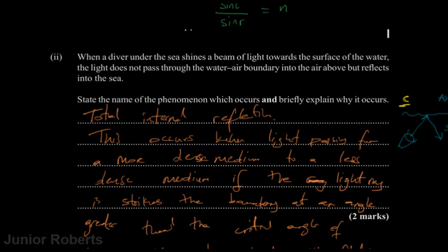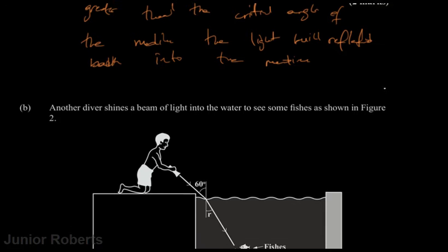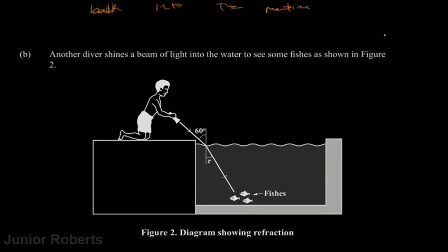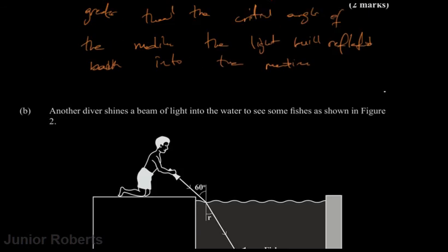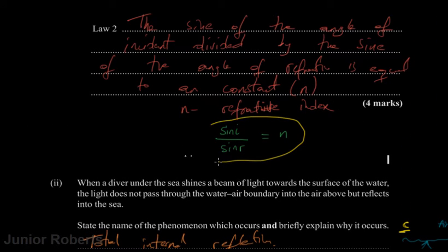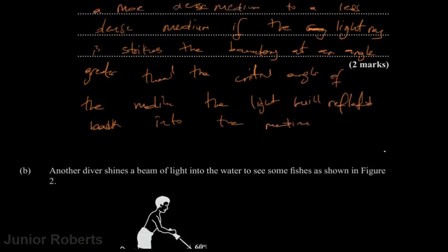Moving to part b — another diver shines a beam of light into the water as shown in figure two. Given that the index of refraction for water is 1.33 and the angle of incidence is 60 degrees, we need to calculate the angle of refraction. We'll use the second law of refraction: sine of the angle of incidence divided by the sine of the angle of refraction equals n.